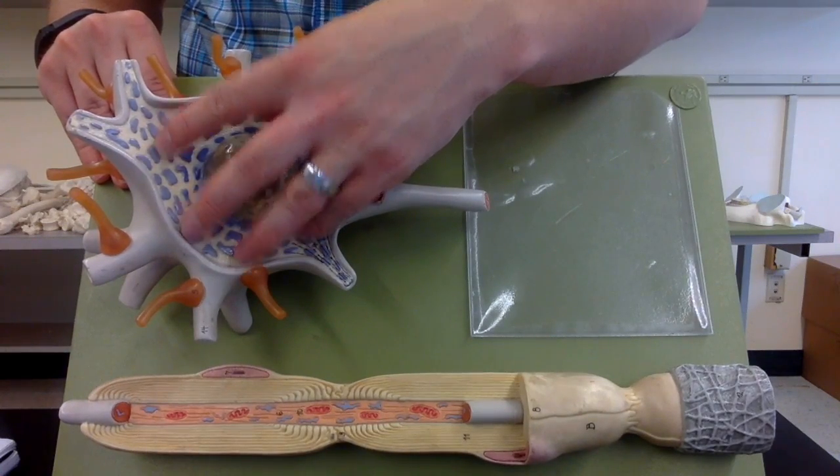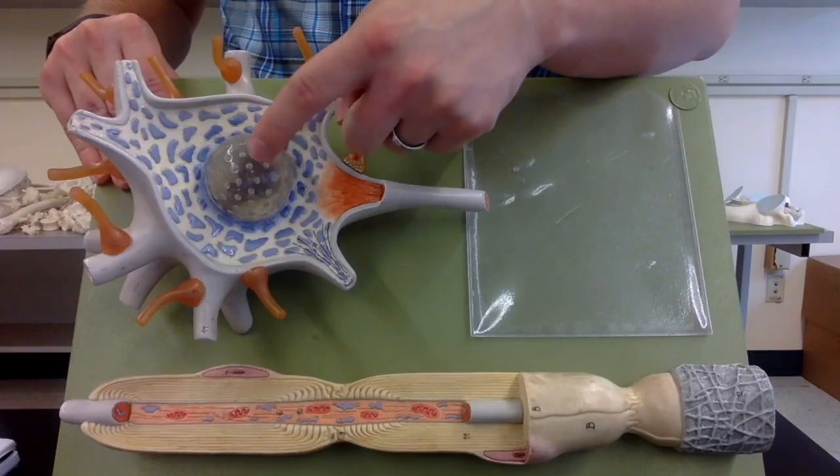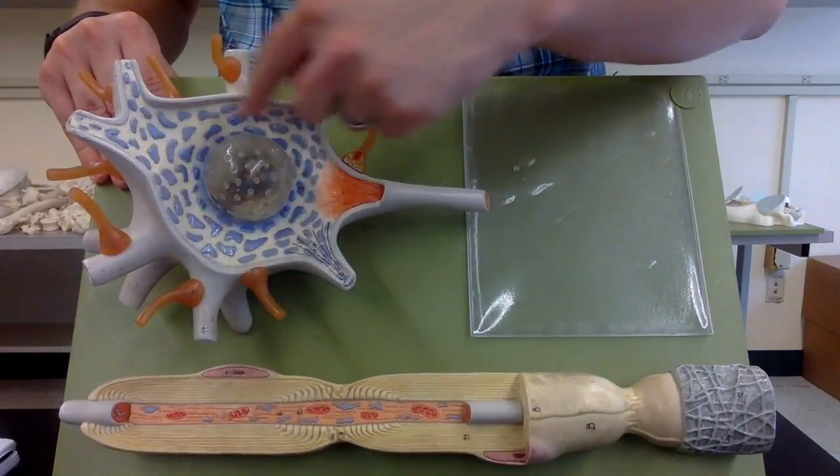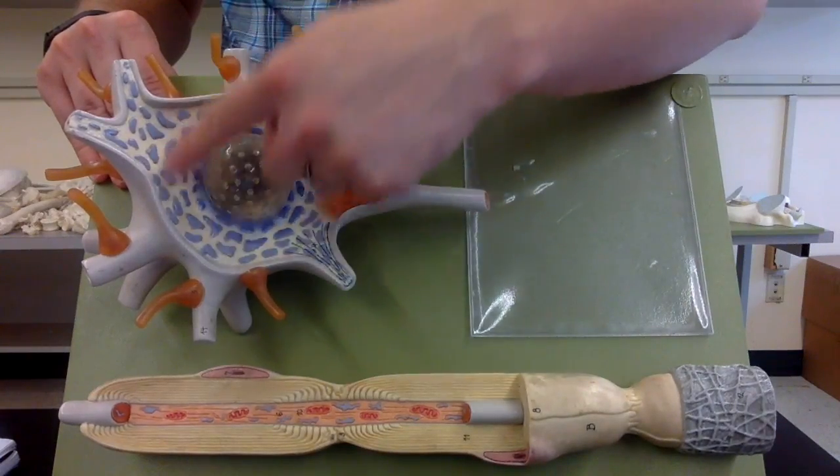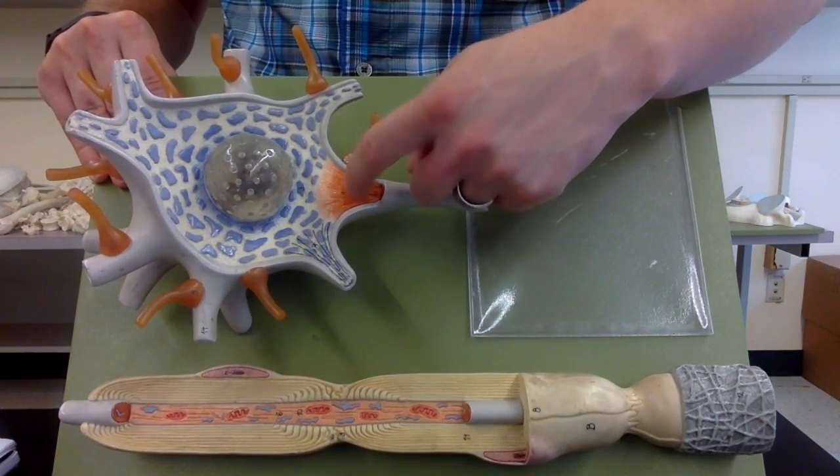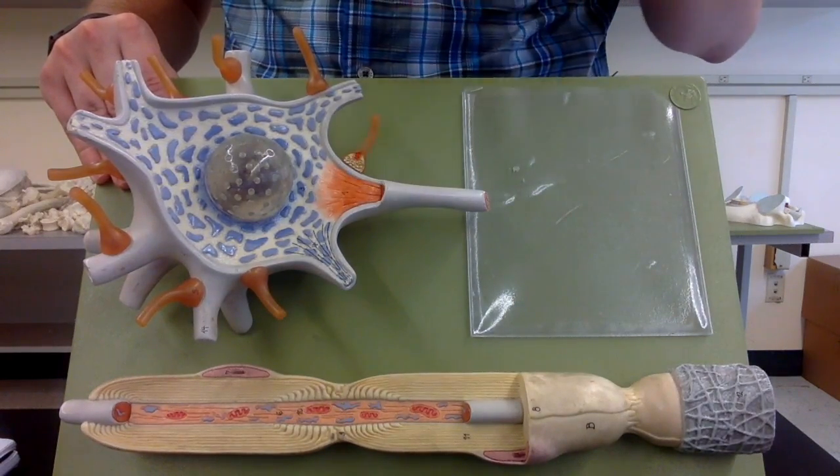This thing is the cell body. Within the cell body we have the nucleus. We also have the cytoplasm of the cell body, which is known as the perikaryon. Then coming off the bottom of the cell body we have this red fiery region known as the axon hillock. That's where action potentials normally say do or die.